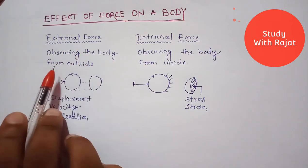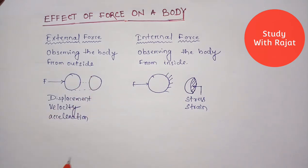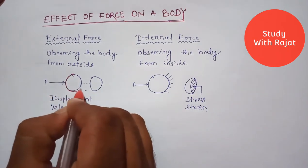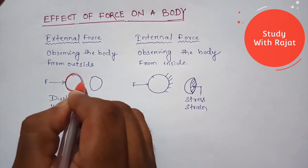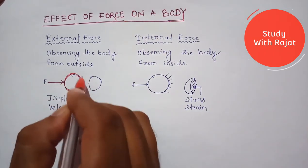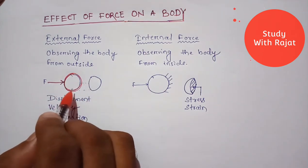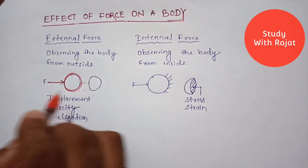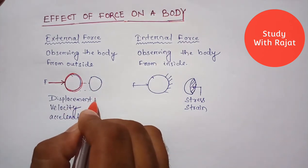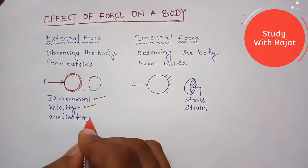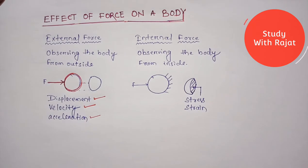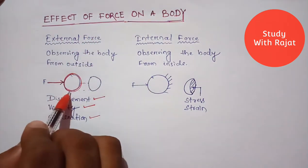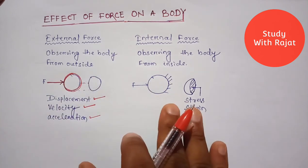External force means we observe the forces acting on a body from outside. There is no support on that body. If a force F acts on the body, the body will move, resulting in displacement, velocity, and acceleration. So we discuss displacement, velocity, and acceleration when external forces act on a body.